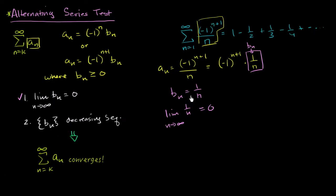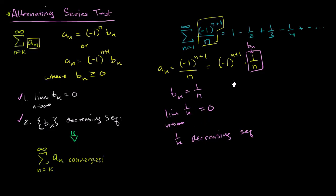And then one over n is clearly a decreasing sequence. As n increases, the denominators increase, and with a larger denominator you're going to have a lower value. So we can also say one over n is a decreasing sequence for the n's that we care about. This is satisfied as well. And so based on that, this thing is always greater than or equal to zero, the limit of b sub n as n approaches infinity is zero, it's a decreasing sequence — therefore we can say that our original series actually converges.